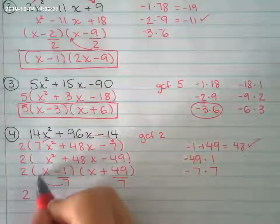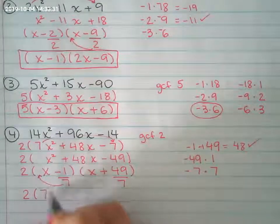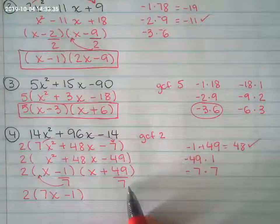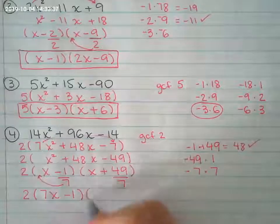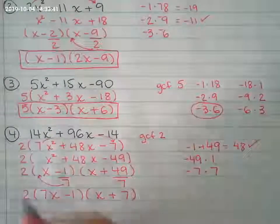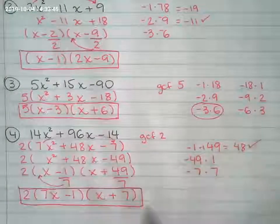I can't simplify this fraction any further. So I bring that 7 back up. 49 divided by 7 is 7. And these are my factors. Thank you.